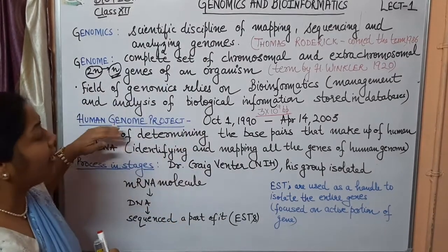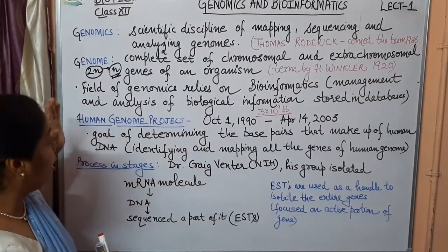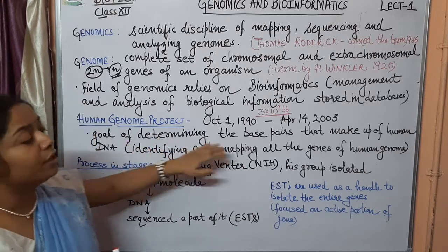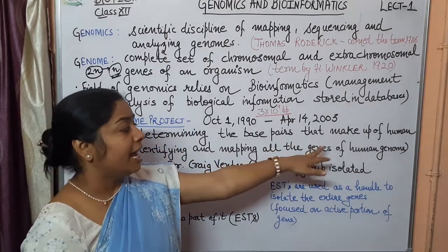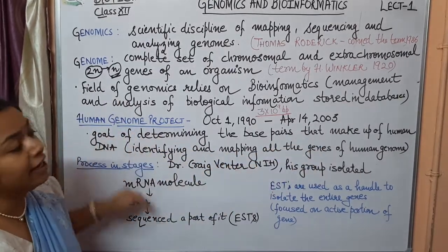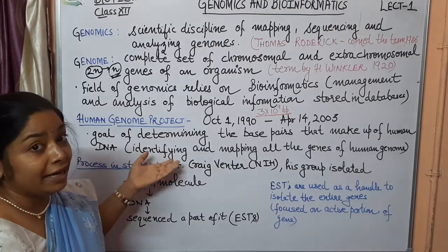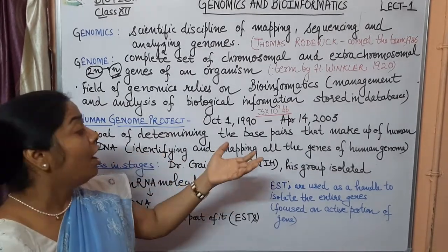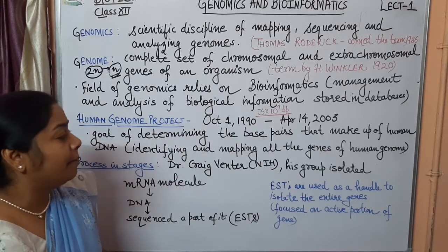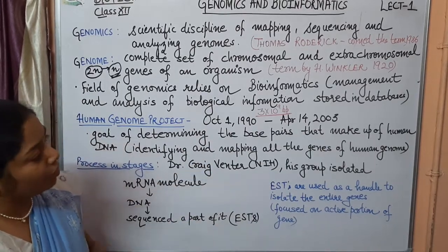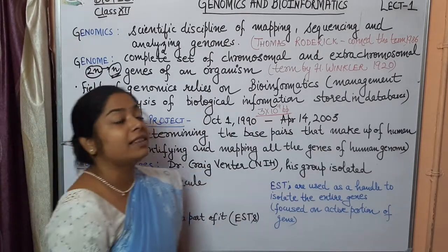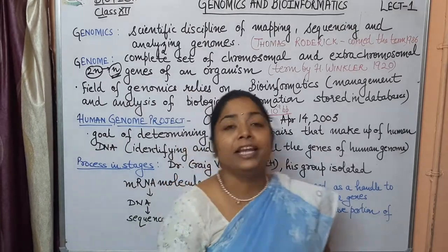The main goal of this project was to determine the base pairs that make up human DNA and to identify and map the whole sequence. After this, a scientist named Dr. Craig Venter entered the picture. Initially he was a fellow member at NIH — the National Institute of Health.